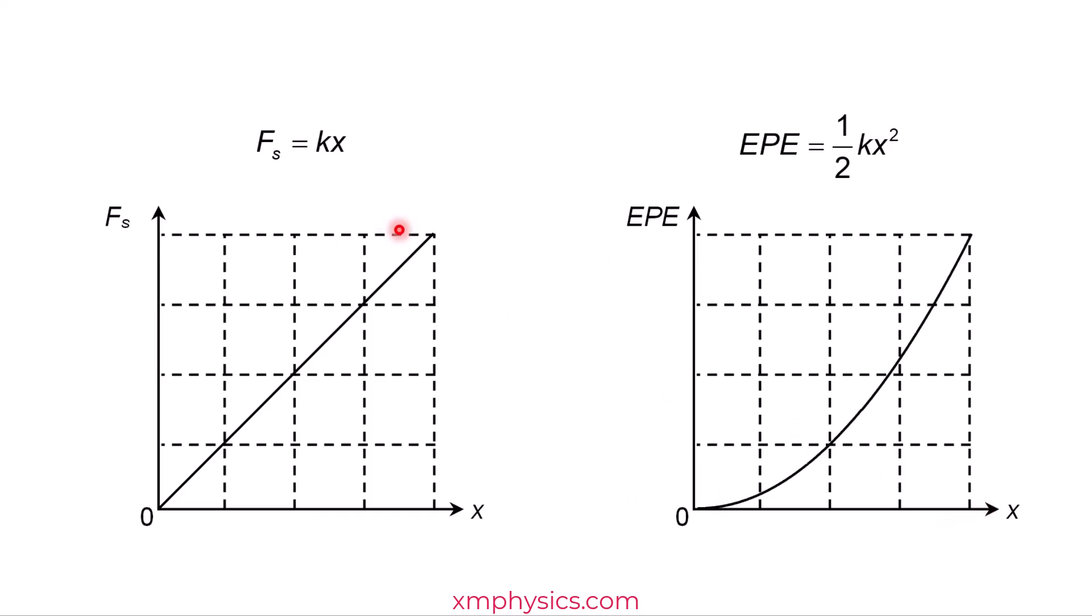So in summary, if the spring obeys Hooke's law, then the spring force equals KX and the elastic potential energy stored in it equals half KX squared. Please don't confuse these two formulas. The spring force is directly proportional to X. The EPE varies quadratically with the extension.